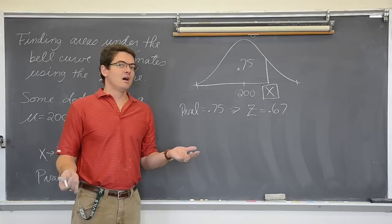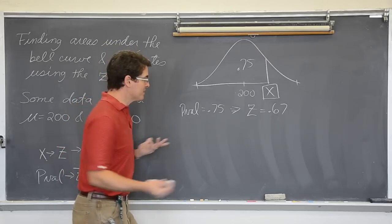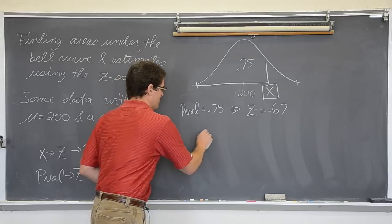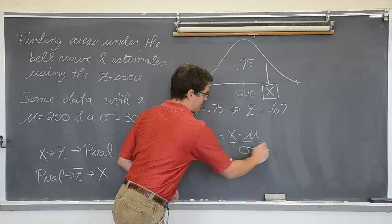Now if I know what the z-score is, guess what formula I am going to use? I am going to do the z-score formula, which is z equals x minus mu over the standard deviation.